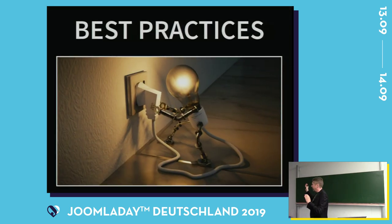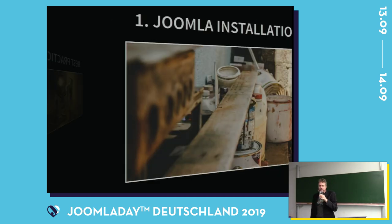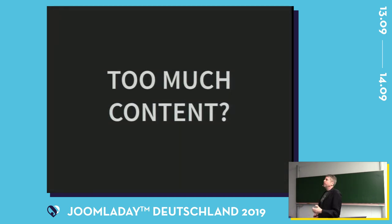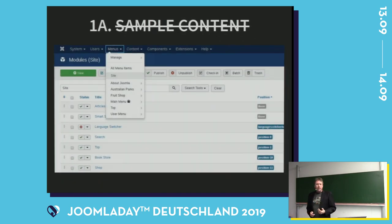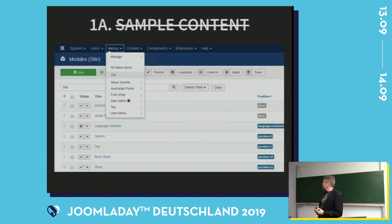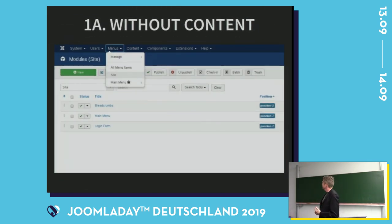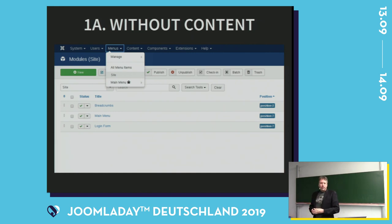I'll now discuss the best practices — things I do in the Joomla backend to make it better for my customers. You start by installing Joomla. If you install Joomla with example content, you'll get all these menus, articles, and modules already there, and I don't like that. If you install Joomla without any content, you just have three modules and a really small menu that you can customize for your client. So this is the first thing I do.